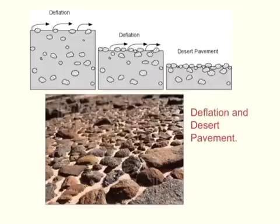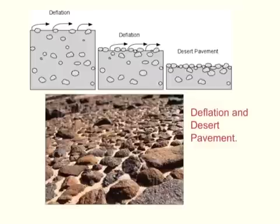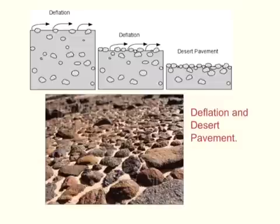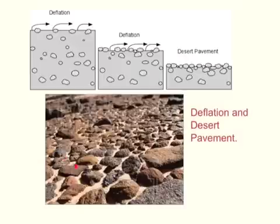The first major form of wind erosion is deflation, where wind removes loose surface material and carries it away. As finer material is transported, deflation leaves behind a rock-strewn surface known as a desert pavement. Initially, rocks are evenly spread within the sand, but as sand is removed by abrasion, rocks pile up and form a dense concentration at the surface.